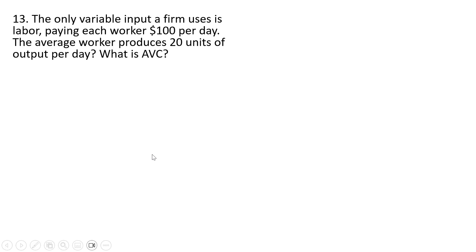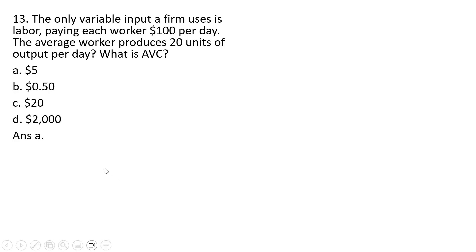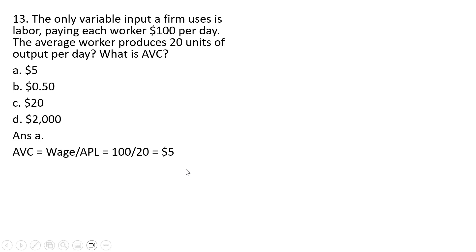Question thirteen. The only variable input a firm uses is labor, paying each worker $100 per day. The average worker produces 20 units of output per day. What is average variable cost? Answer choice A, or $5. Average variable cost equals the wage divided by the average product of labor: $100 divided by 20 equals $5.